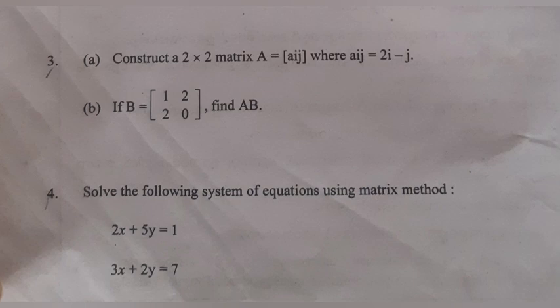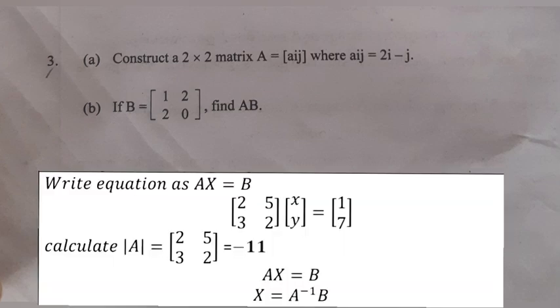Solve the following system of equations using the matrix method: 2x + 5y = 1 and 3x + 2y = 7. Write the equation as AX = B, where A = [[2, 5], [3, 2]], X = [x, y]ᵀ, and B = [1, 7]ᵀ. Calculate determinant of A: det(A) = (2)(2) − (5)(3) = 4 − 15 = −11.